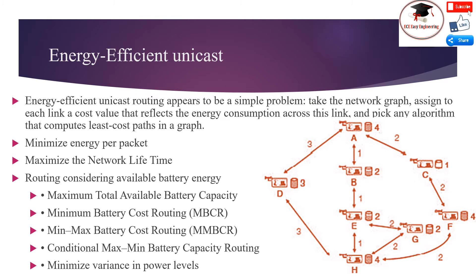Conditional maximum battery capacity routing works conditionalized upon the actual battery power levels available. If there are routes along which all nodes have battery levels exceeding a given threshold, then select the route that requires the lowest energy per bit. If there is no such route, then pick the route which maximizes the minimum battery level. Last is minimize variance in power level: to ensure a long network lifetime, one strategy is to use up all batteries uniformly to avoid some nodes prematurely running out of energy and disrupting the network. Hence, routes should be chosen such that the variance in battery energy level between routes is reduced.